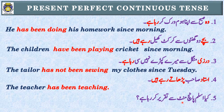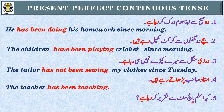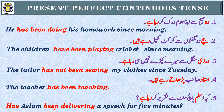Sentence 5: 'کیا اسلم پانچ منٹ سے تقریر کر رہا ہے؟' Identification: 'رہا ہے' اور 'پانچ منٹ سے' — Present Perfect Continuous Tense۔ Subject: 'اسلم' — singular noun — has been۔ Interrogative: has کو sentence کے start میں لے آئیں گے۔ Has Aslam been delivering a speech for five minutes?